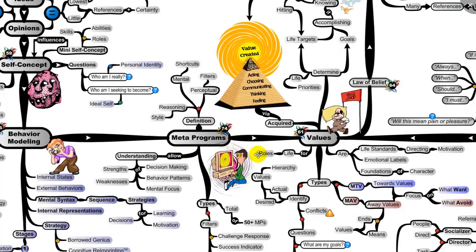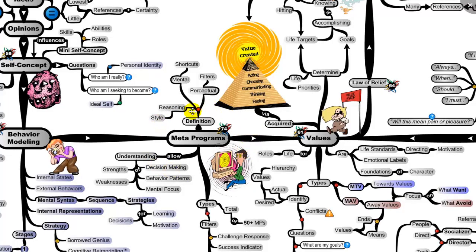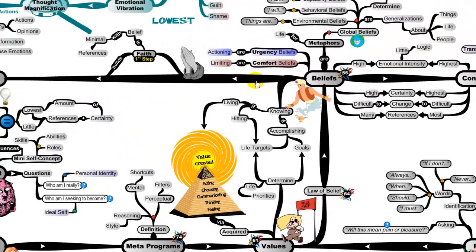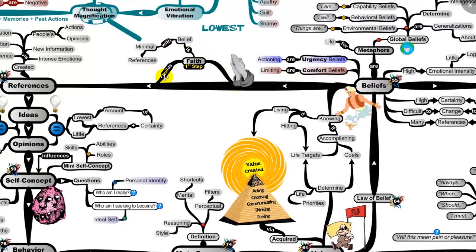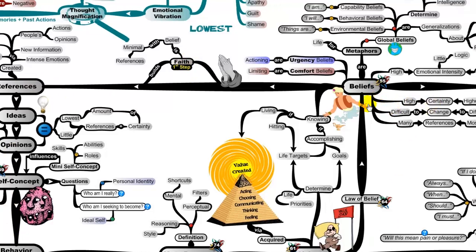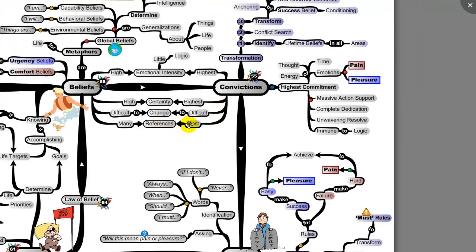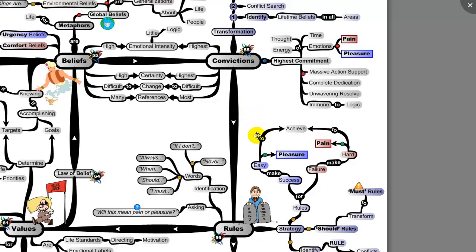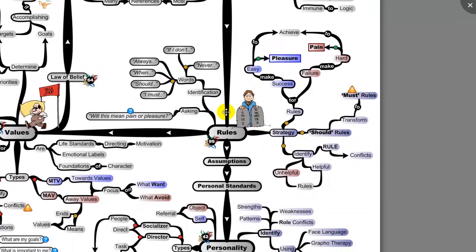We have meta programs — an NLP term for why we respond to different things in our environment in habitual ways. There's a great article on the IQ Matrix blog about this. We also have our values, which are intrinsically connected to our belief systems. If we don't have enough belief we delve into faith, and faith can eventually turn into a belief system. Strong beliefs with the highest certainty, most difficult to change, with the most references behind them are called convictions. We also have psychological rules — different rules you have for certain things in your life.